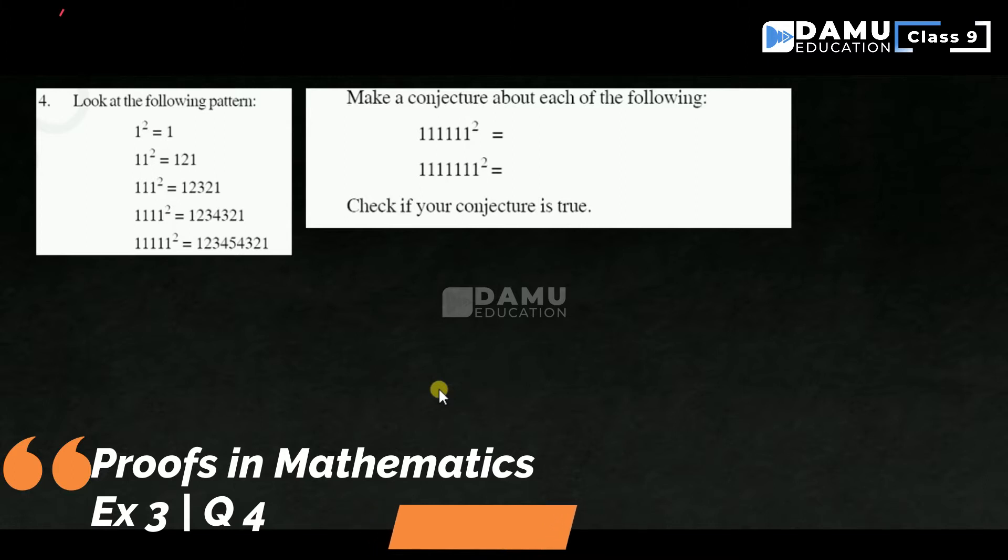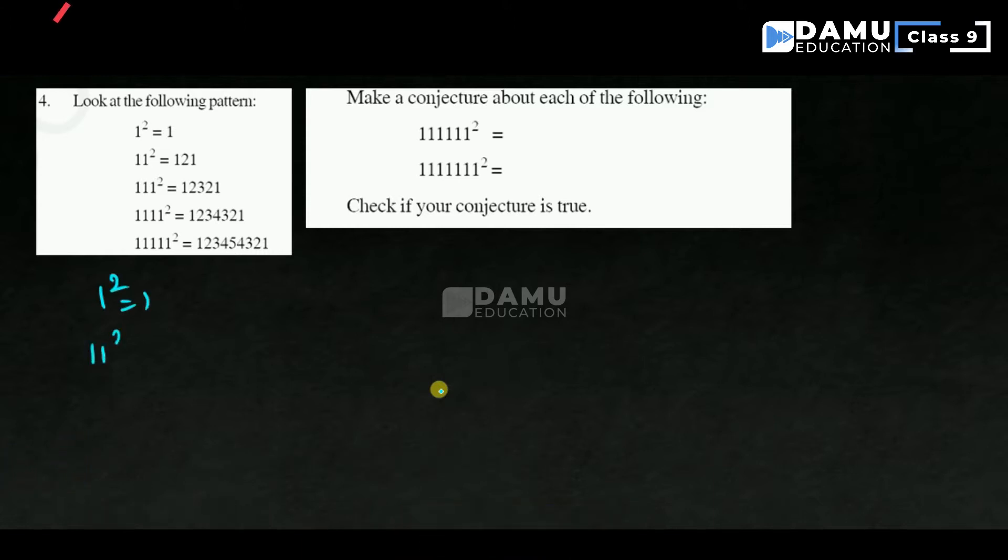Look at the following pattern. They give that 1² = 1, then 11² = 121, then 111² - that is 1, 2, 3, 2, 1.